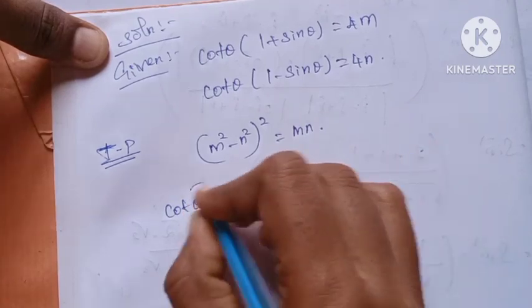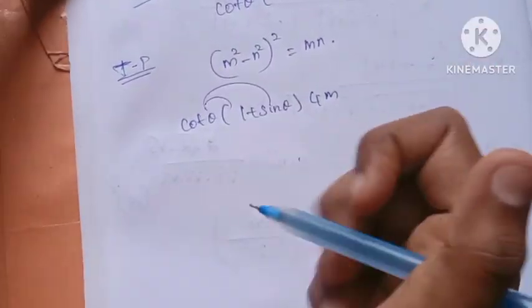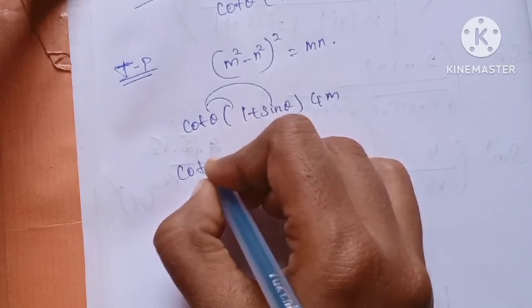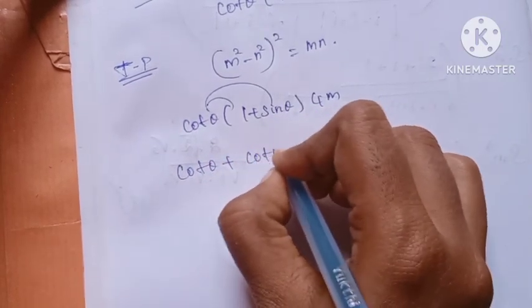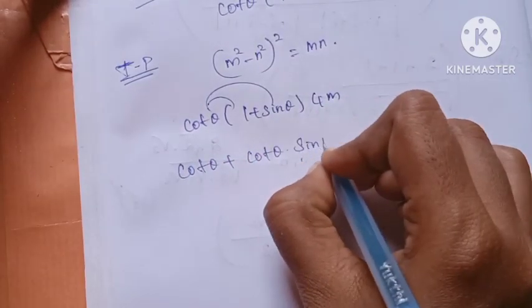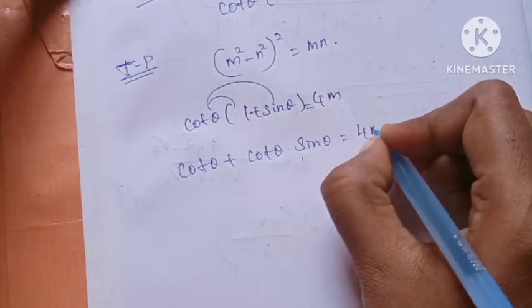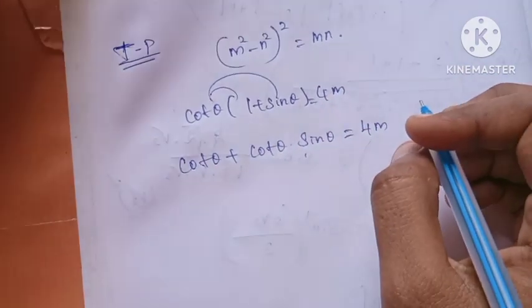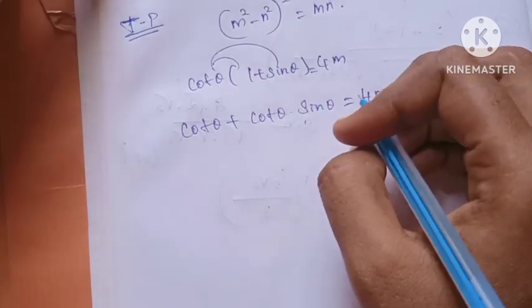So what are we going to do now? We are going to do this first. We are going to add equation 1: cos theta into 1 plus sin theta is equal to 4m.